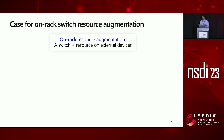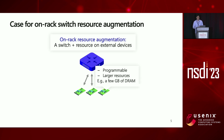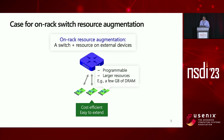Instead, we explored an alternative approach, which we called on-rack switch resource segmentation. In this architecture, a programmable switch is connected to a few external devices, such as smart NICs, which are also programmable and provide a large amount of resources such as gigabytes of DRAM. By leveraging the heterogeneity of this architecture, we can make different trade-offs for different sets of applications and workloads in a cost-efficient manner, and it's easy to expand by just adding more external devices.